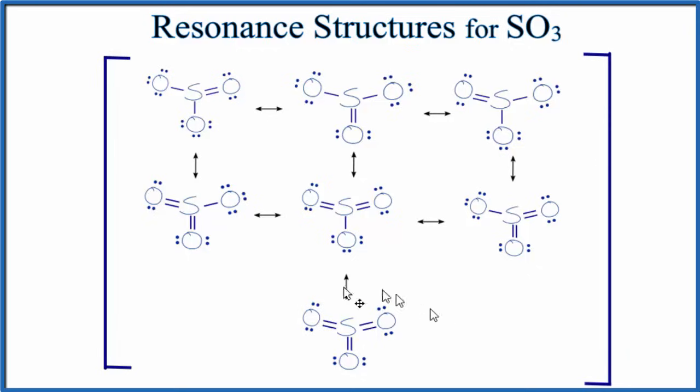While this is the most stable or most favorable Lewis structure based on our rules, in reality, it turns out that these three equivalent resonance structures right here are the major ones we'll see in the lab. If you collected experimental data, this is what you would see.